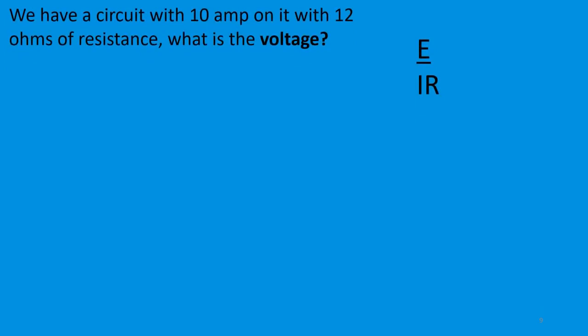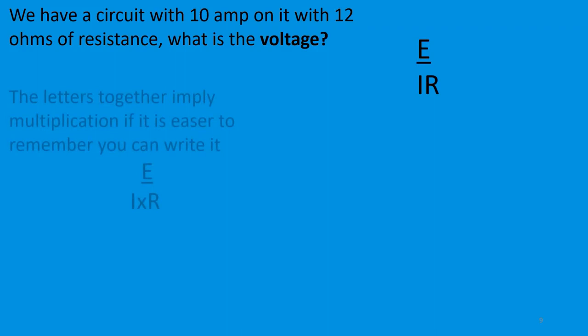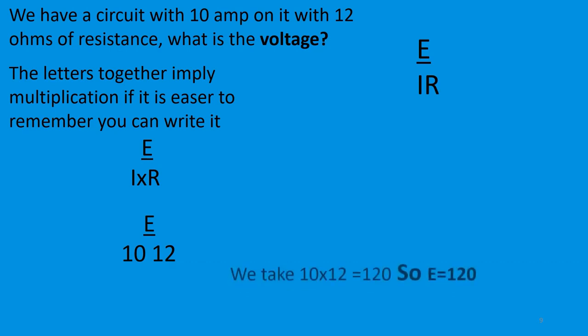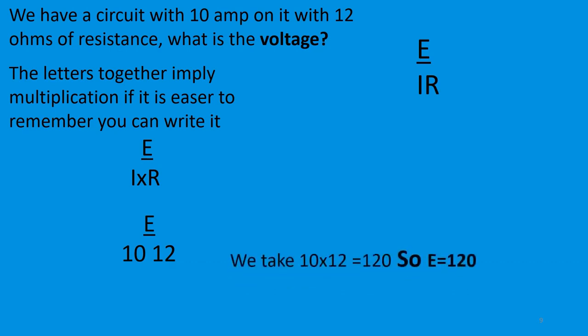We have a circuit with a 10-amp draw and 12 ohms of resistance. What is the voltage? The letters I and R together imply multiplication. You take 10, multiply it by 12, and that gives you the voltage: 10 times 12 equals 120, so E equals 120 volts.